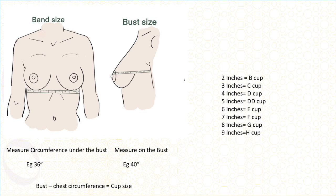For example, in this patient, 40 minus 36 is 4 inches, which means she is a D cup.